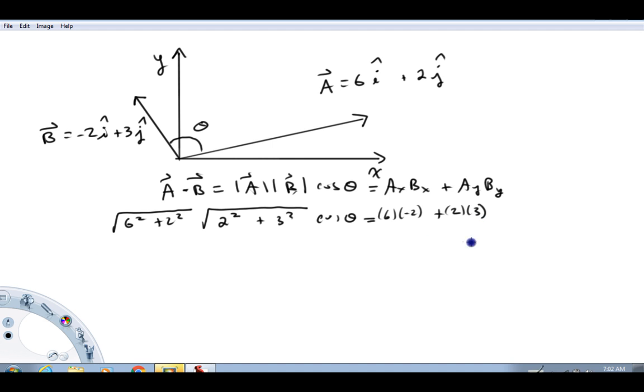So putting in all of these numbers, here's what we get, and now what we can do here is we'll be able to solve this for theta, or first I'll solve for cosine theta, and then we'll solve for theta.